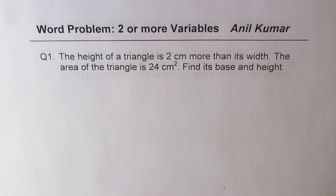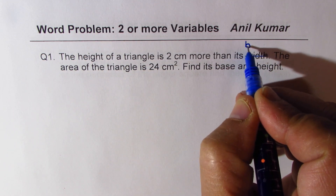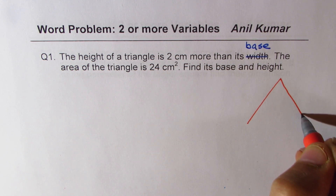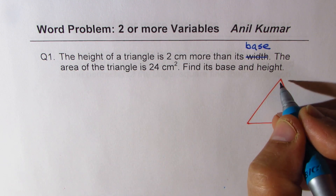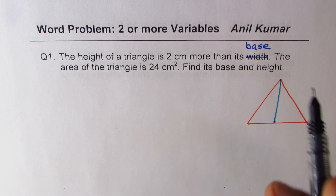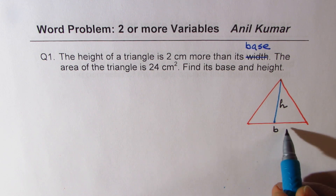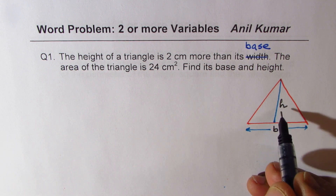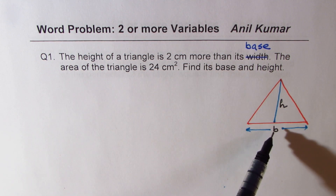We'll solve question number one in these steps. The height of a triangle is two centimeters more than its base — I'm changing width to base. Let me sketch this triangle. Here we have a triangle whose height is H and this is the base B. Take any general triangle. We have the diagram and the variables: H represents height, B represents base. Now let's write down the equation.